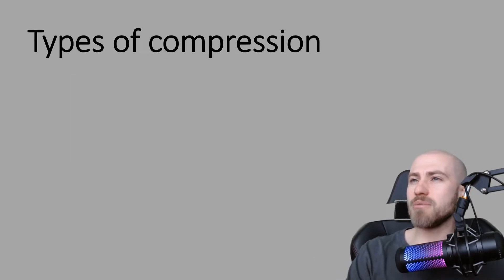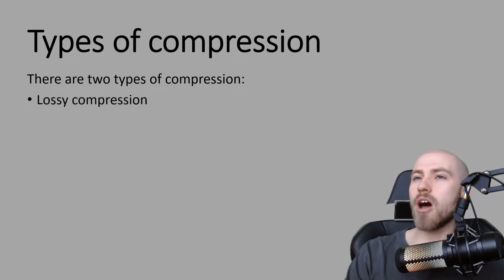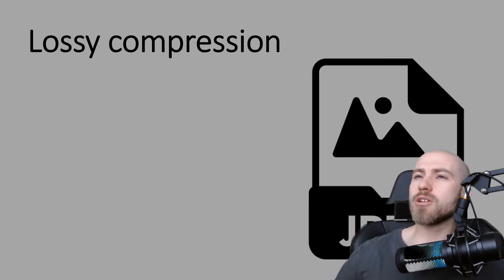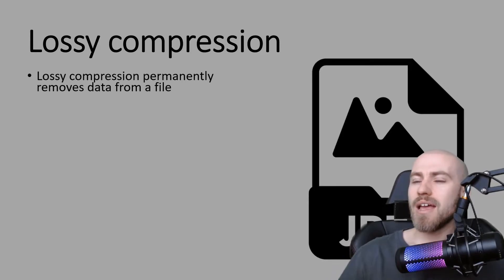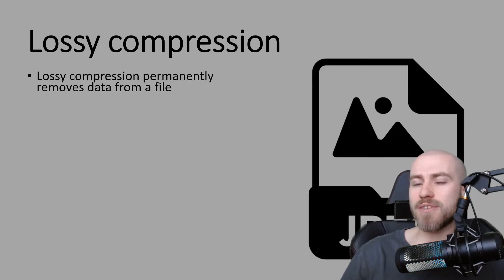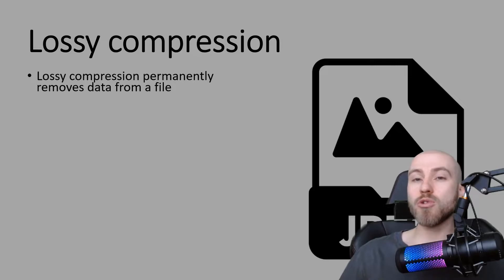So as I mentioned earlier, we've got two different types of compression: lossy and lossless compression. Let's look at lossy compression first. If you've got a file such as a JPEG, which is an image file, lossy compression will actually reduce the number of colors available in that image — so it reduces the amount of bits needed per pixel, which is the color depth we were talking about in our image representation video.